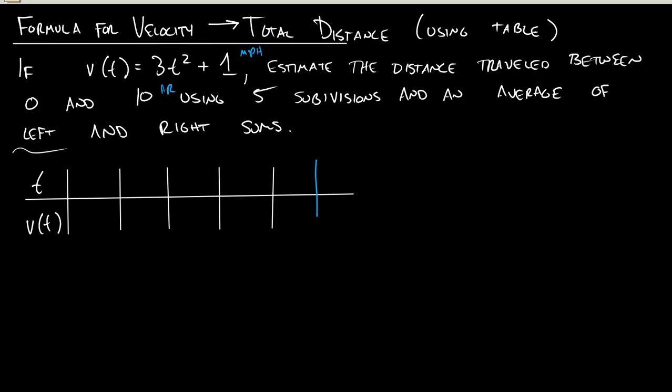Okay, and so here we look at a last way we can get information about velocity and in return get the total distance we traveled over that time. So here I have a formula that tells me my velocity at a certain time, t. And what I want to do is I want to estimate the distance I traveled between 0 and 10 hours.